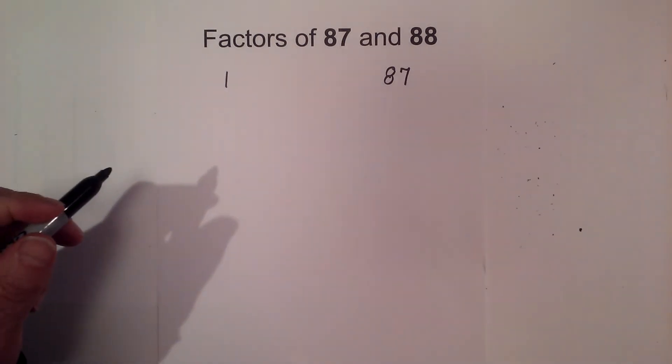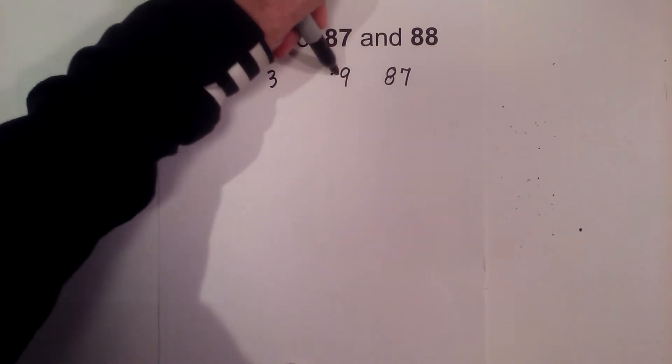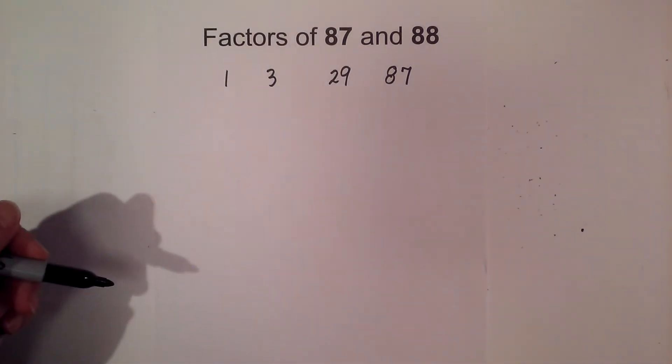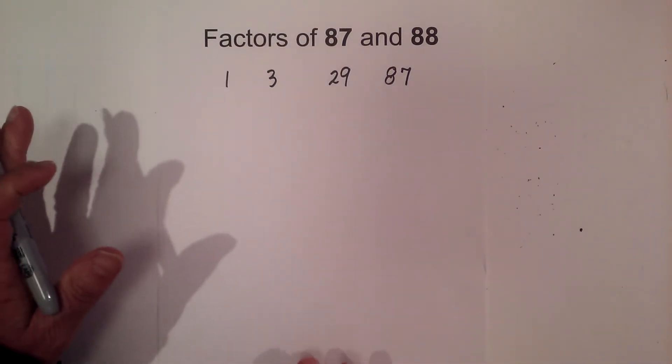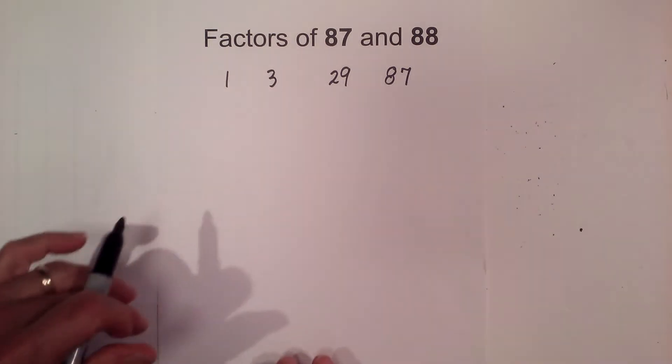2 will not go into 87, but 3 goes into 87 29 times, and then 4, 5, 6, 7, 8, 9, 10, etc. Really the only number that goes into it is 3 and 29.